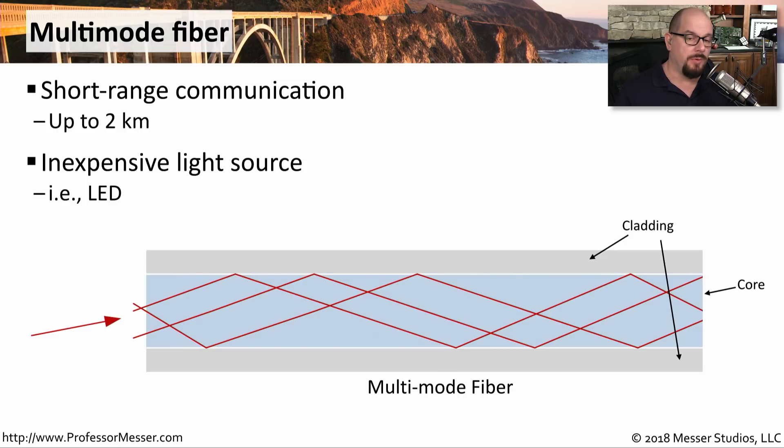We call this multi-mode fiber because the core of the fiber is larger than the wavelength of the light that we're sending through the fiber. As the signal propagates down the fiber, it will begin to disperse and you will have multiple modes of signal arrive at the other end.